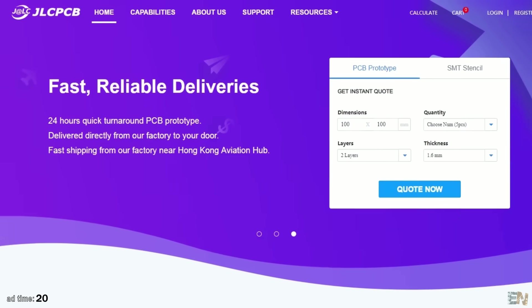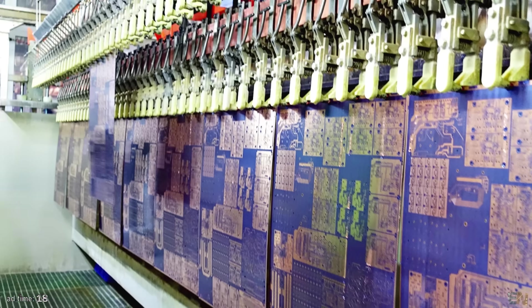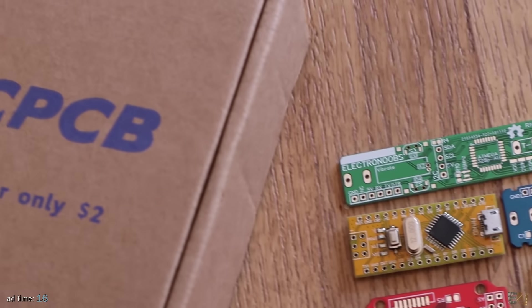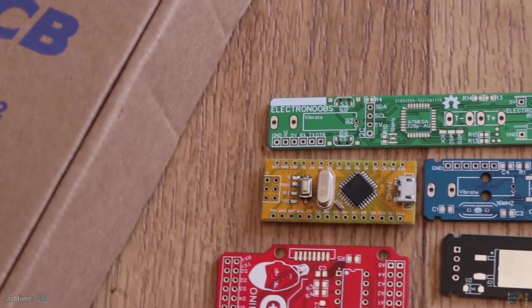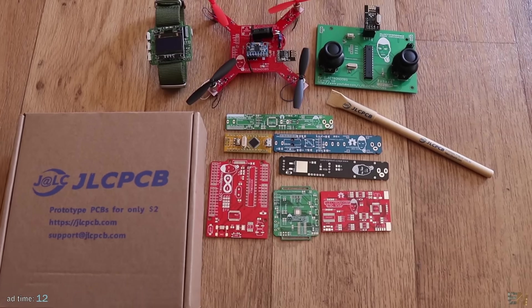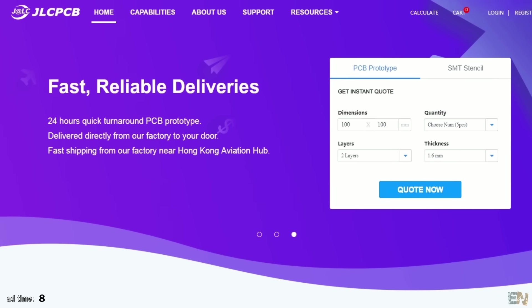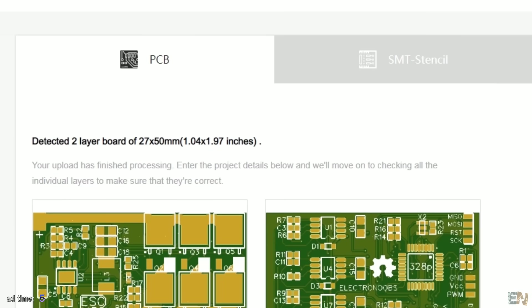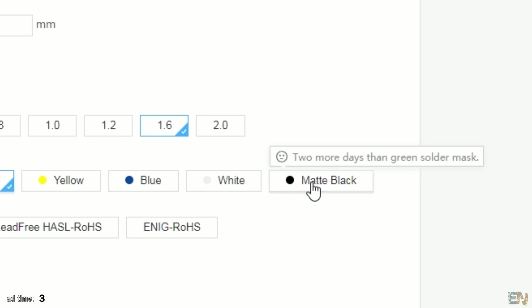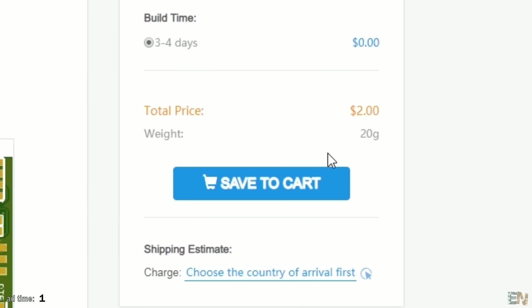JLCPCB is sponsoring this video. They provide fast and best value prototyping services. With their online and instant quote, fast fabrication and competitive prices, you can save a lot of time and money. So quote now, upload the Gerber files of your PCB and for only $2 plus shipping, you can order PCBs in less than 5 minutes.